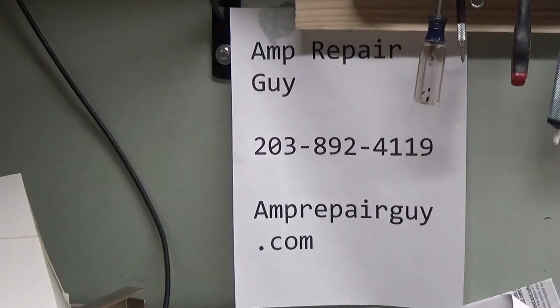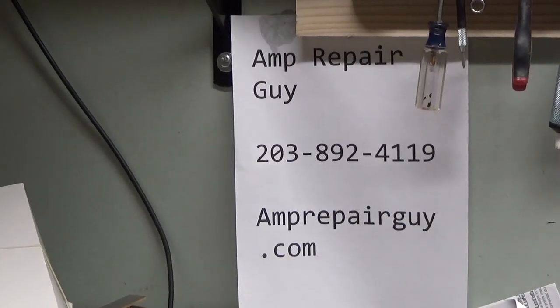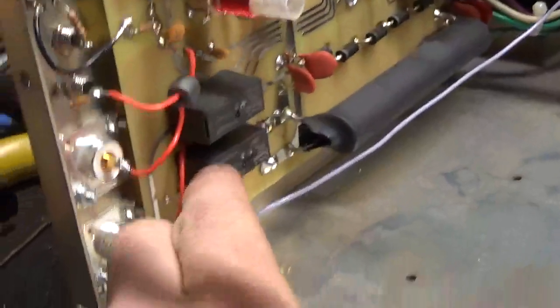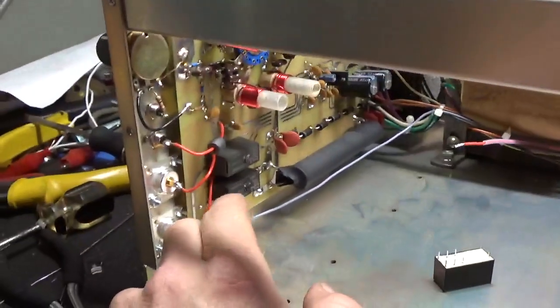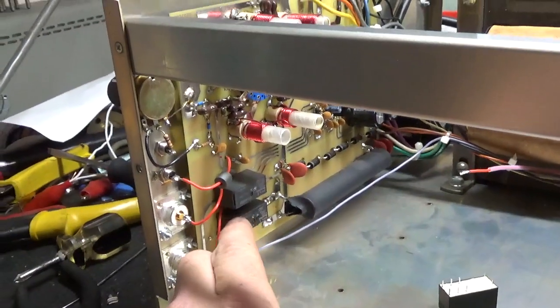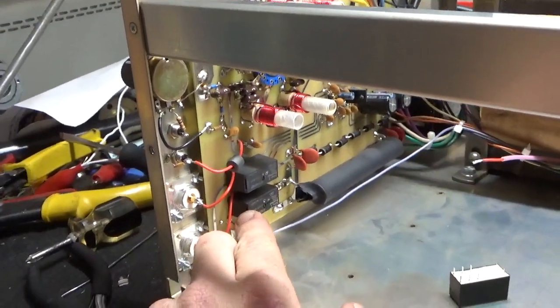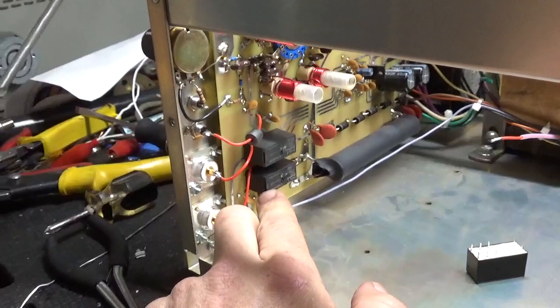Today we have another Ameritron AL-811H. So the bottom relay here is damaged. He had a massive failure with one of the tubes flashing internally.